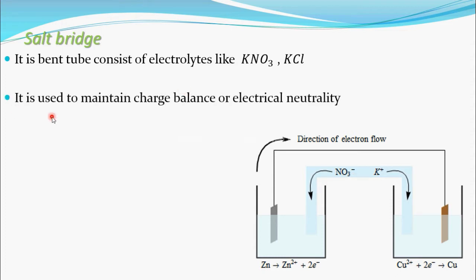The salt bridge is used to maintain charge balance or electrical neutrality. This is the oxidation half-cell and this is the reduction half-cell. In the oxidation half-cell, zinc oxidizes into Zn²⁺ and releases two electrons, which travel through the external circuit.